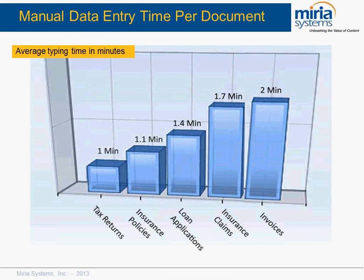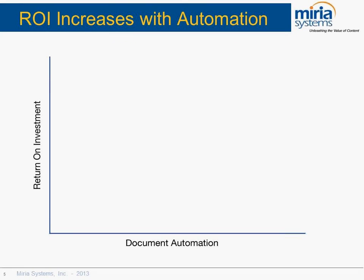So why do we need to look at this? The biggest reason is saving time by automating data entry. You can see from the chart that it takes a few minutes to process a single document — multiply this by a few thousand and you get into a significant amount of time. The more you organize and automate, the higher the ROI.